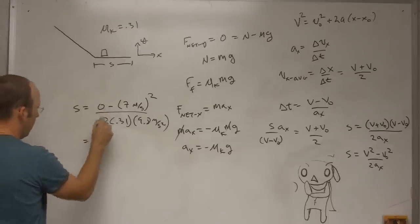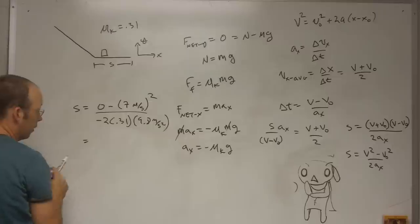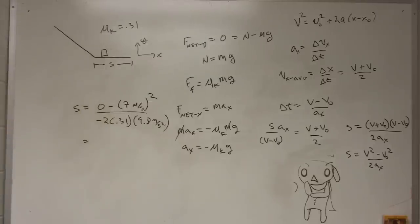And so I get, and it's going to be a positive number, too, because these are going to cancel. Let me just put this in my handy-dandy calculator here, one second. So I have 7 squared over 2 times 0.31 times 9.8. And I get 8 meters.